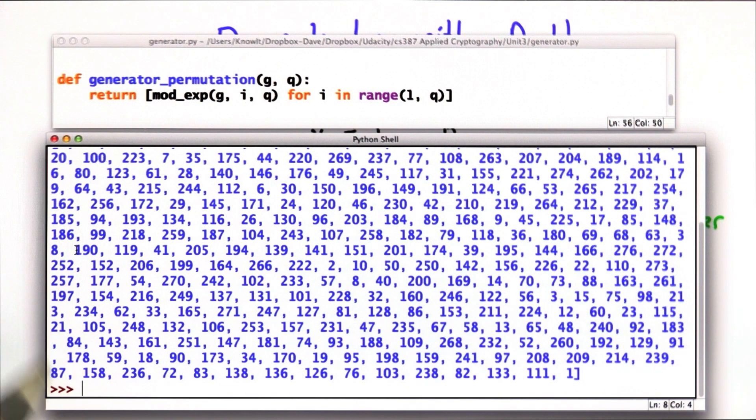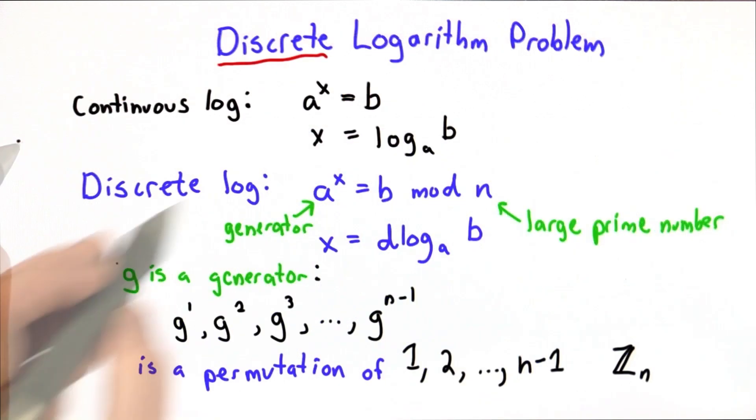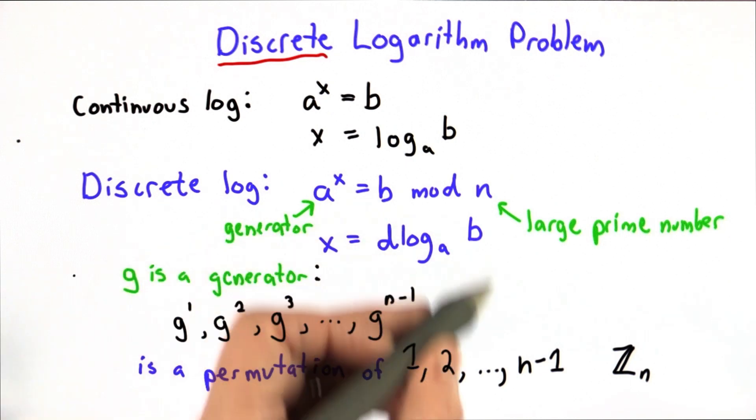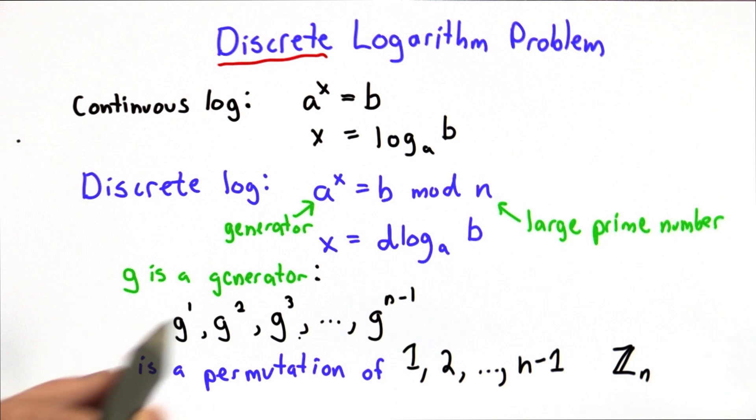Showing the sequence certainly is not enough to convince you that that's hard to do. And there's no proof that it's hard. The reason people believe it's hard is that many smart people have tried to find good ways of doing this, and none of the solutions run in polynomial time. The fastest known solutions are exponential. That means essentially that the only way to solve this is to try all possible powers until you find the one that works.